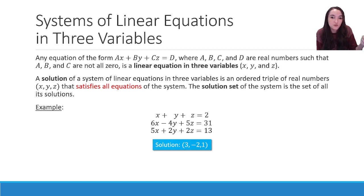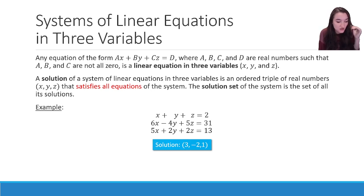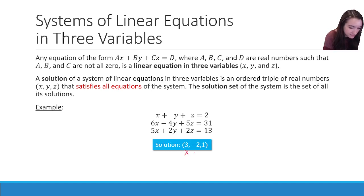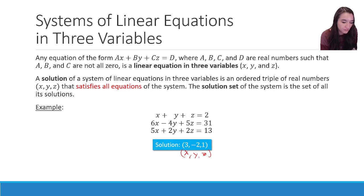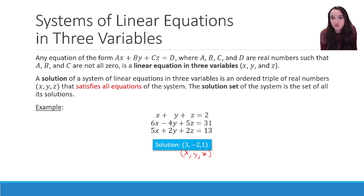For example, the system x plus y plus z equals 2, 6x minus 4y plus 5z equals 31, and 5x plus 2y plus 2z equals 13 has a singular solution at (3, negative 2, 1). We plug in 3 for x, negative 2 for y, and 1 for z. Just like ordered pairs default to (x, y), ordered triples default to (x, y, z). For a singular solution to be possible, we need three equations for three variables.